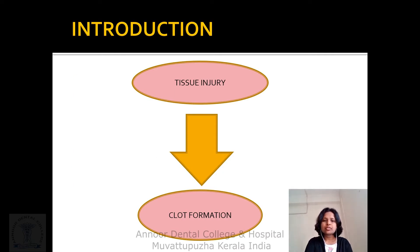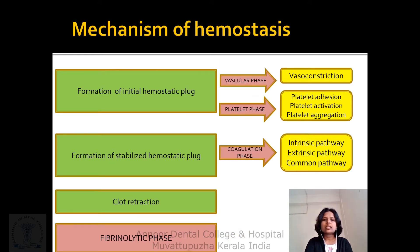Whenever tissue injury happens, there will be clot formation. The mechanism of hemostasis involves four basic steps: formation of an initial hemostatic plug, formation of a stabilized hemostatic plug, clot retraction, and the fibrinolytic phase. Formation of the initial hemostatic plug involves two phases — the vascular phase and the platelet phase. In the vascular phase there is vasoconstriction, and in the platelet phase there is platelet adhesion, activation, and aggregation.